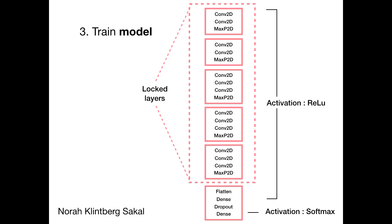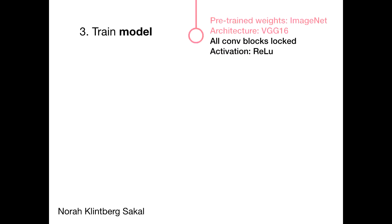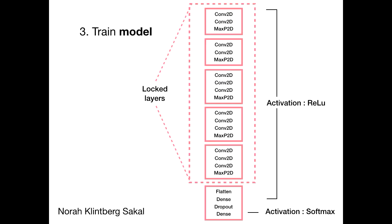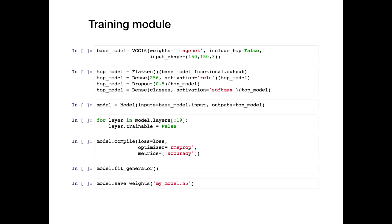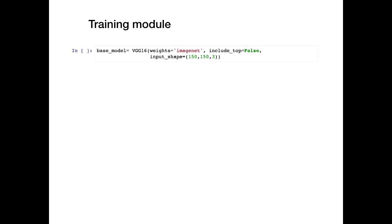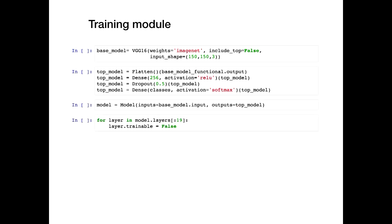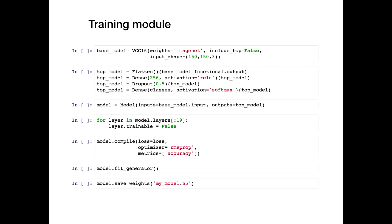I used a nonlinear activation for the locked layers and linear activation for the fully connected layer. Just to recap: I used pre-trained weights, the fairly simple architecture VGG16, I locked all the convolutional and pooling layers, used a dropout rate to help the model generalize better, and softmax for the fully connected layer. Then I ran it for 50 epochs, 16 images at a time until the model had seen all of the images. And really, this is all the code needed — about 15 lines — to initialize the model, build the top, lock the pre-trained layers, compile it, and save the model.